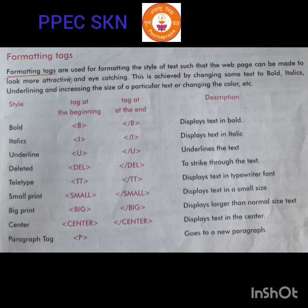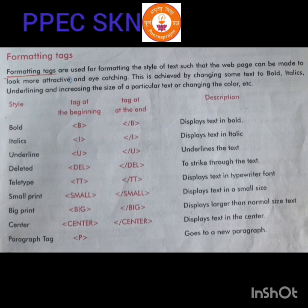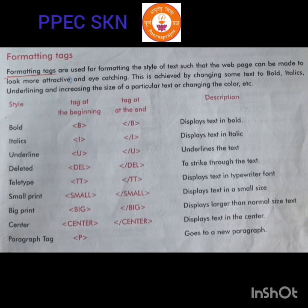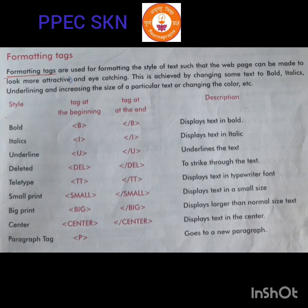Some formatting tag examples are bold, italic, underline, big print, small print, and paragraph tag — paragraph tag we already explained. Now let's see how to use these types of tags. To make text bold, if your font should be bold, the tag is B. It's very easy to remember — bold, we take the first letter B in the HTML tag. Then italic is I.